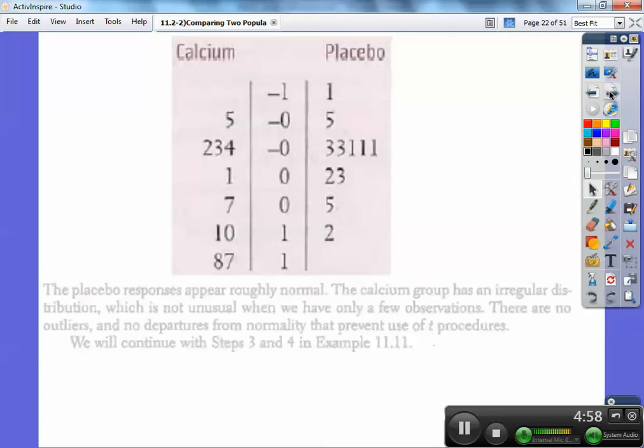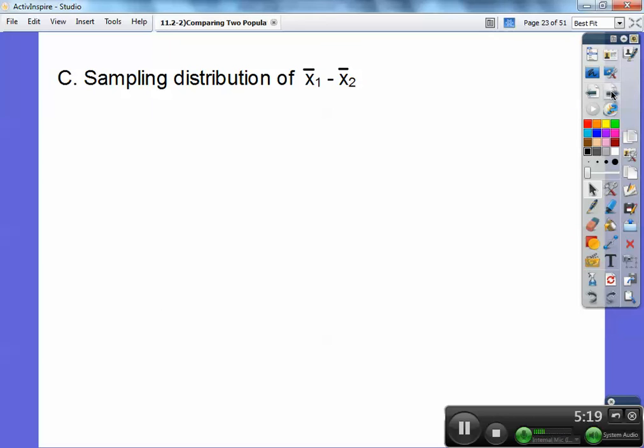So the placebo response appears, this guy over here, doesn't that appear like a nice normal curve? The calcium group has an irregular shape which is not unusual when there's only a few observations. There's only 10 of them right here. And there's no outliers and there's no departures from normality that prevent us from using what we're going to do as a T procedure.